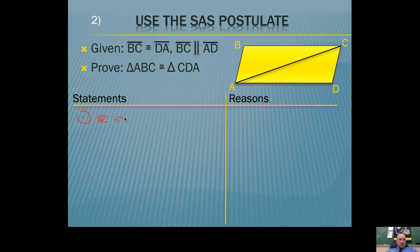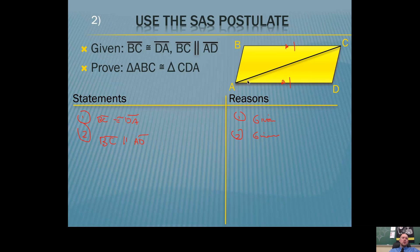Use the Side Angle Side postulate. Segment BC is congruent to segment DA — that's given. There is another piece of given information, but I'll write it on a second step because it's a completely different concept: we're talking about parallel segments. If these segments are parallel, then you should know these angles are congruent. When you have parallel segments, your alternate interior angles are congruent, so be careful how you name them — we'll name this one angle CAD first.